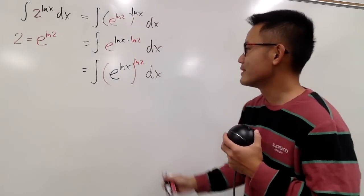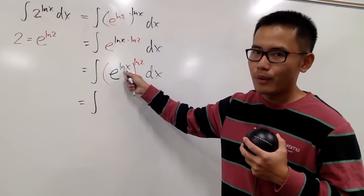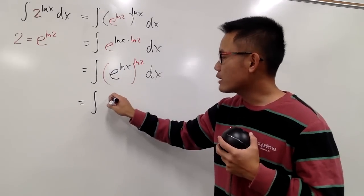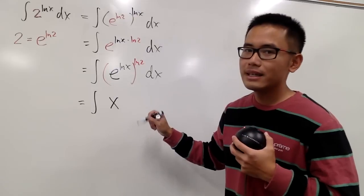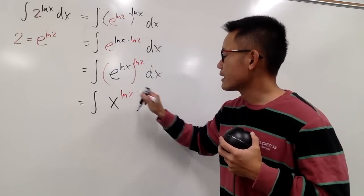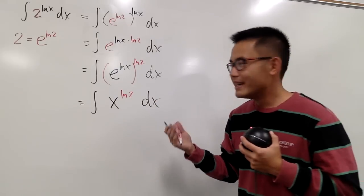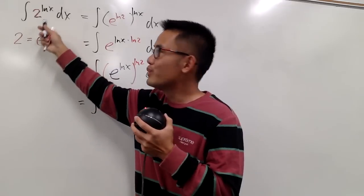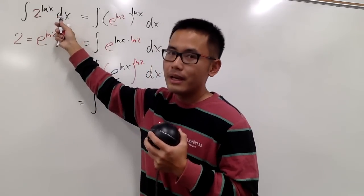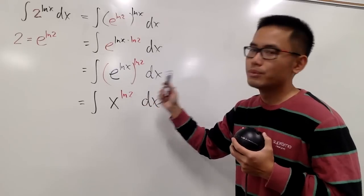after these three steps, you can see that this is the integral e to the ln x power. They cancel out. So you actually just have an x, right? And then that's raised to the ln 2 power, like that. And of course we have the dx, like this, alright? So yes, in another word, the integral of 2 to the ln x power, it's the same as the integral of x to the ln 2 power.